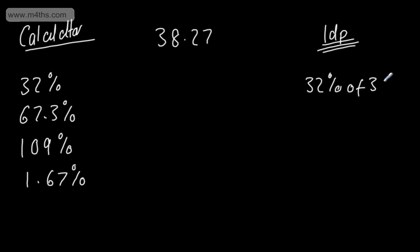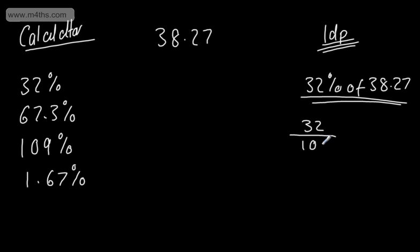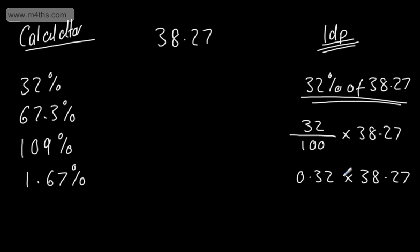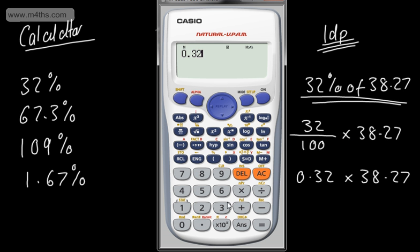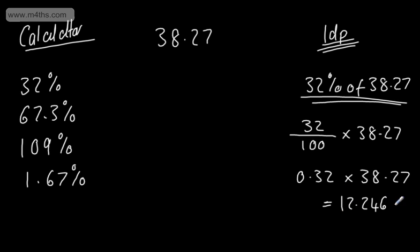When we talk about 'of' in maths, we mean multiplication. So 32% of £38.27 means 32/100 × 38.27. As a decimal multiplier, that's 0.32. Putting this into the calculator: 0.32 × 38.27 = 12.2464, which rounds to 12.2 to 1 decimal place.